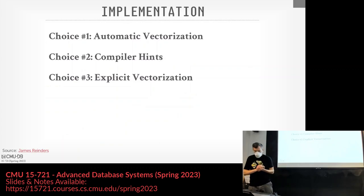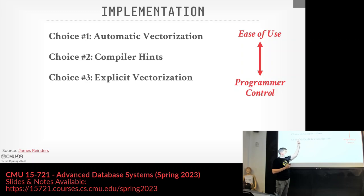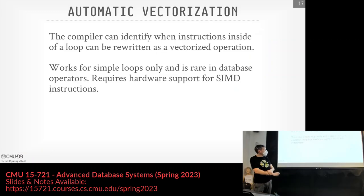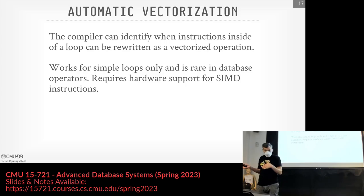There are three approaches to implementing SIMD in a database system: automatic vectorization, compiler hints, and explicit vectorization — ranging from easiest to hardest to use, with increasing fine-grained control. Automatic vectorization relies on the compiler detecting vectorizable loops. It works for simple loops but is rarely applicable for database operators, which are more complex than a simple less-than comparison in a loop.